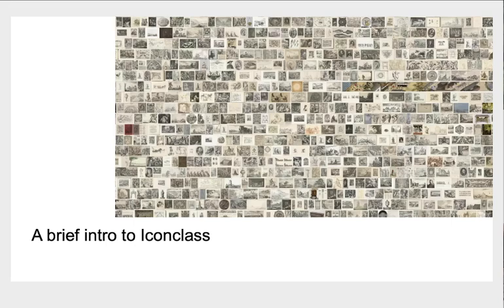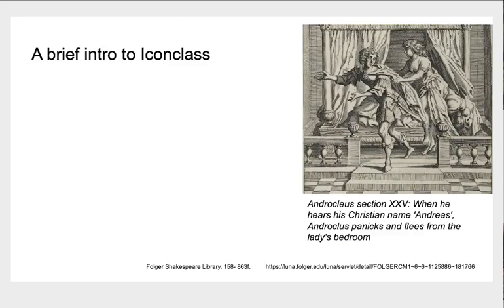With the advances in computer vision tools that became practically accessible for working on image collections of reasonably large sizes, the Art Historian's Bicycle has been given an upgrade so that it enables us to explore even larger territories at a much greater speed.